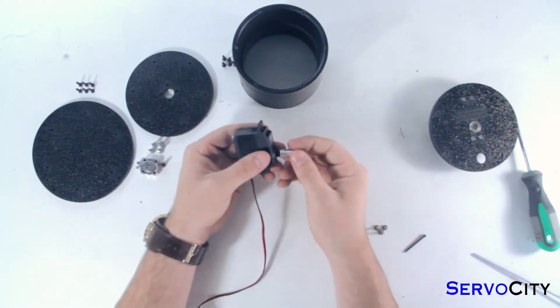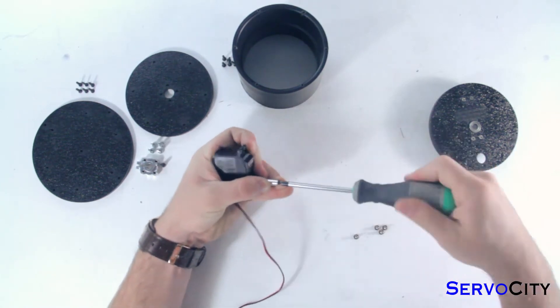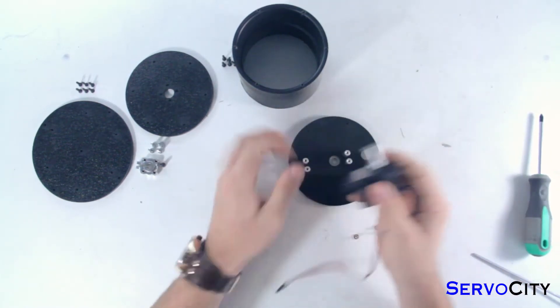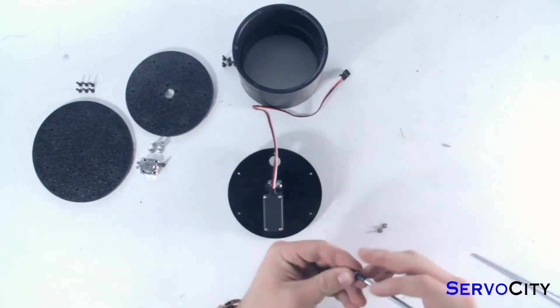First, press the shaft horn onto the output shaft of the servo and secure that in place using the servo screw. Then attach the servo to the back side of the plate we just put together using the four truss head screws.